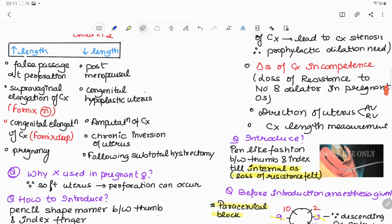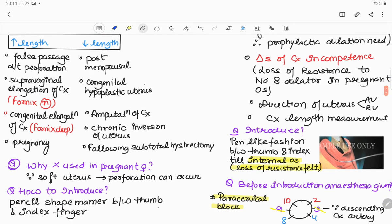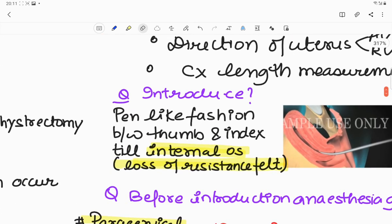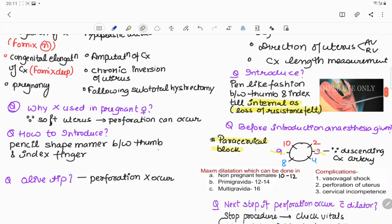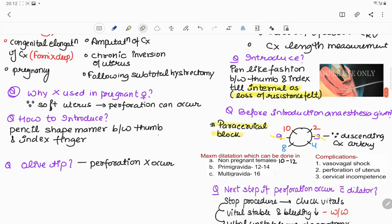It is also introduced in the pen-like fashion between thumb and index finger, but till the internal os where the loss of resistance is felt, as you can see in this picture. But before introduction, anesthesia can be given. What type of anesthesia we can give is paracervical block. It is given on 2 or 10 o'clock position or 4 or 8 o'clock position. Most favorite question is why it is not given at 3 or 9 position? Because descending cervical artery is there.